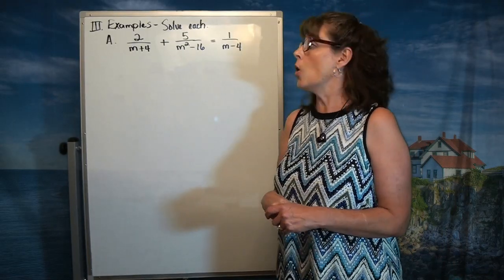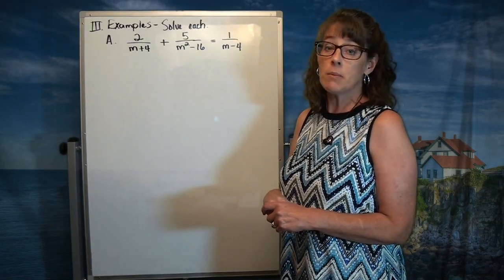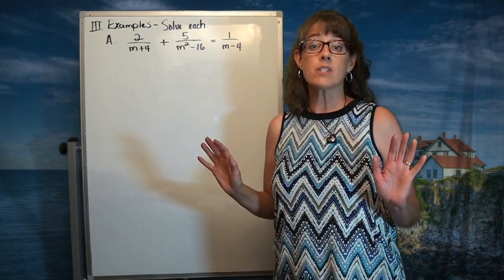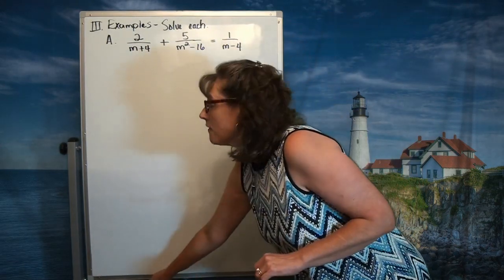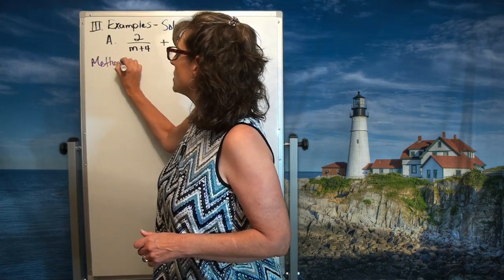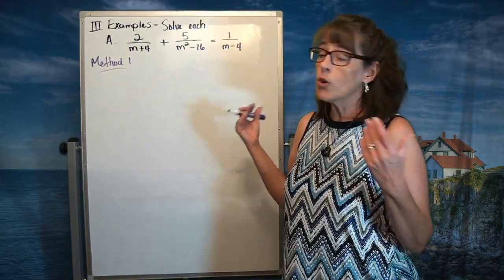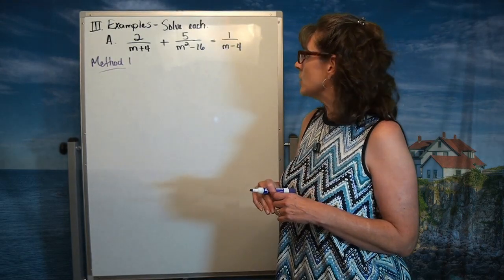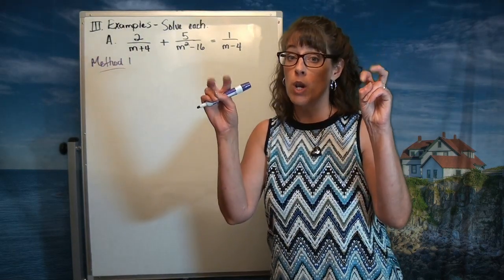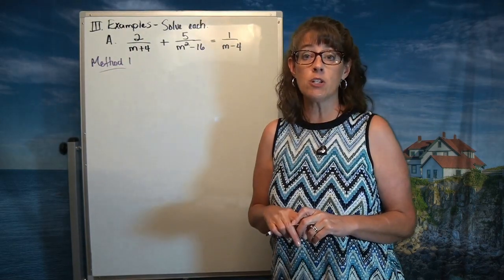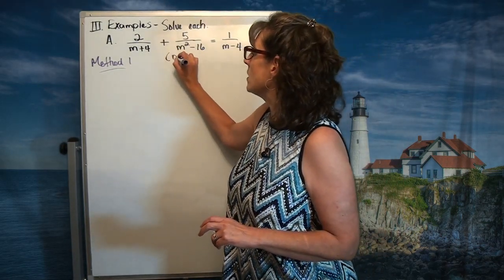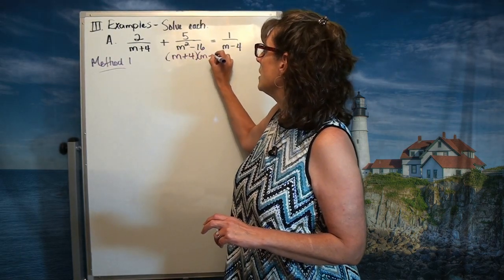As you can see in this example, notice — oh my goodness — look at the denominators: an m plus 4, an m squared minus 16, and an m minus 4. Wow, we haven't seen anything like that. In the first method that says we're going to retain the fractions, we need to get the LCD. We'll need the LCD even for the second method. To get the LCD, let's factor: that m squared minus 16 is the equivalent of m plus 4 times m minus 4.